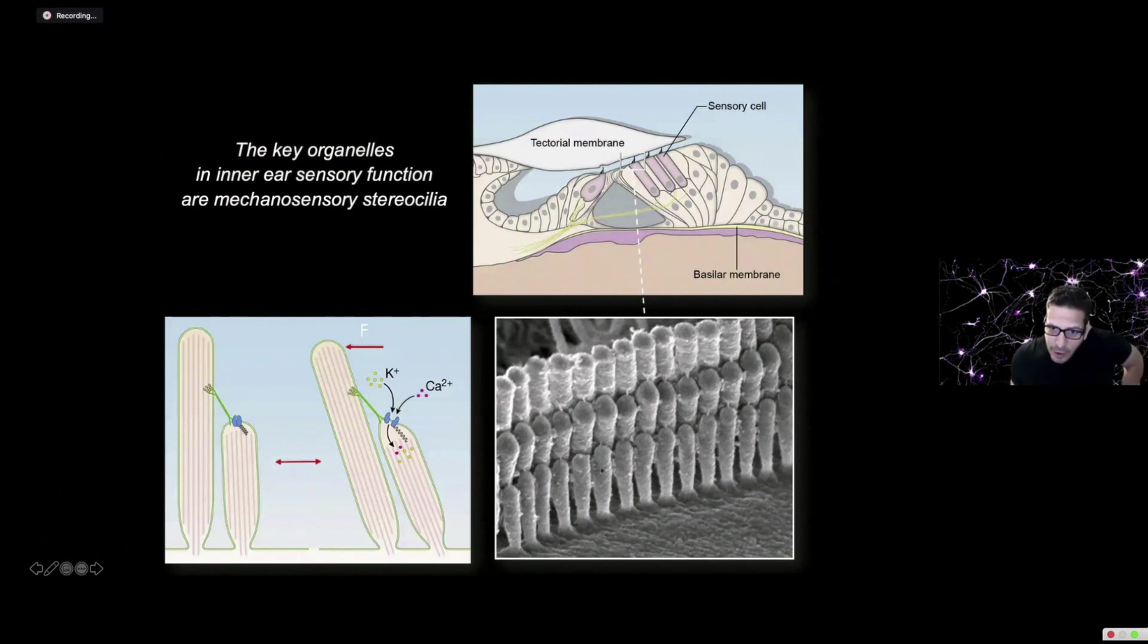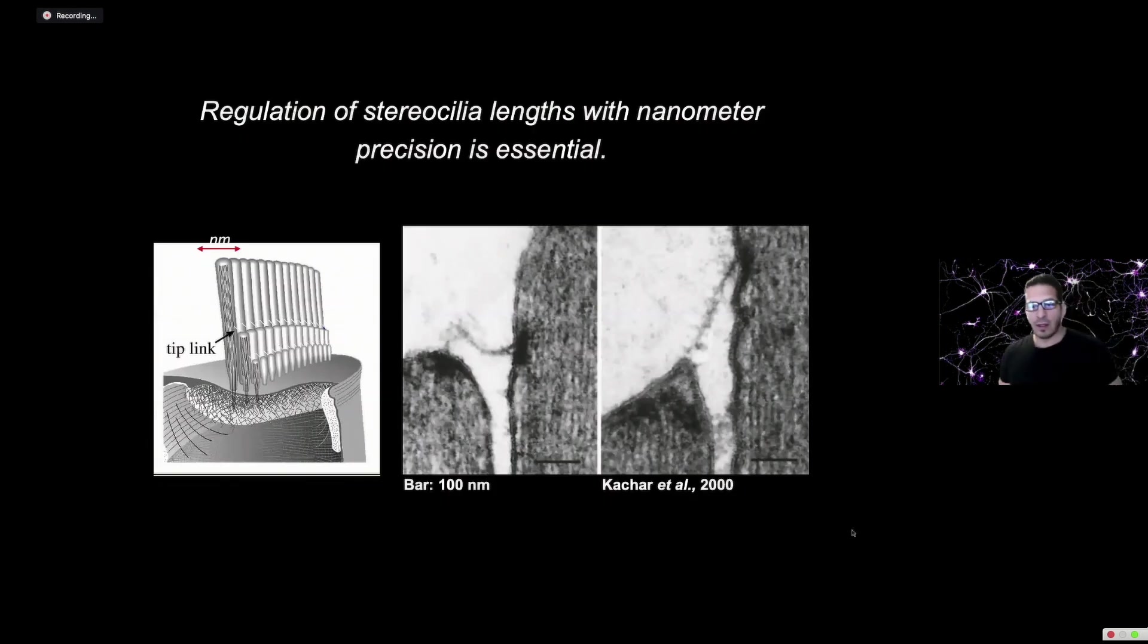This is a higher magnification scanning electron microscope image showing these little tip links. The shorter rows are connected to the taller rows by this little filament. You can see them connecting the shortest hairs to the taller hairs. That's necessary for when they move back and forth to cause these channels to open. It's like flicking on and off a light switch at the frequency of sound. That's the signal that needs to get to the brain.